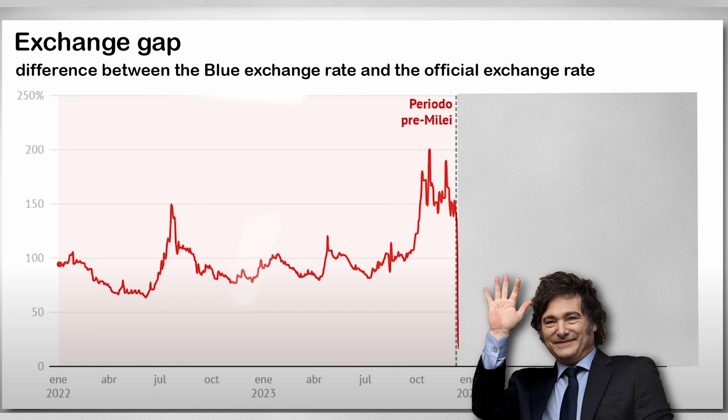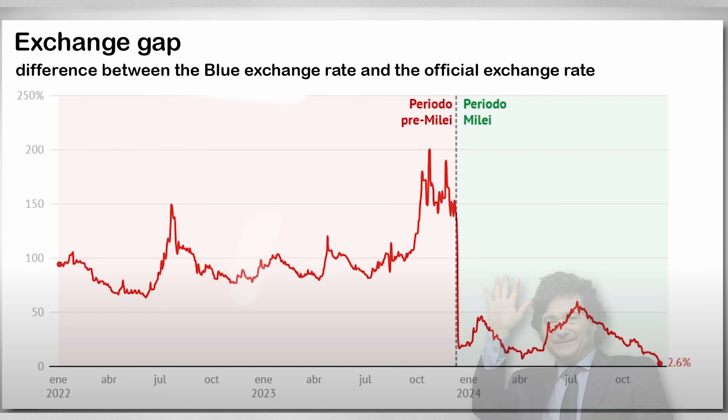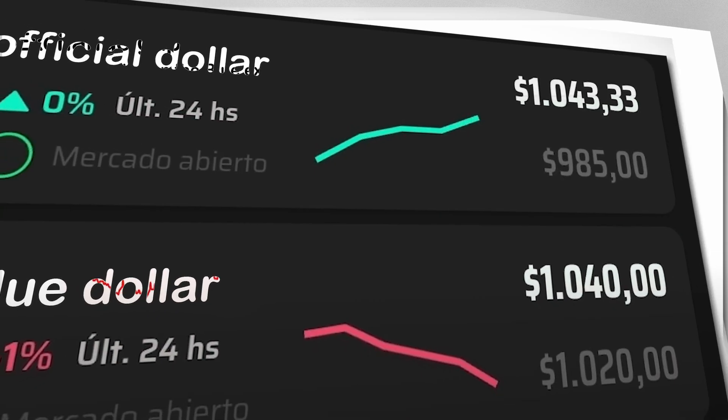Here's where things get interesting: when Javier Milei assumed the presidency, the exchange rate gap was around 200%, meaning the market dollar was triple the official rate. Since then, the gap has been narrowing, and recently, for the first time in history, the gap with the blue dollar turned negative.